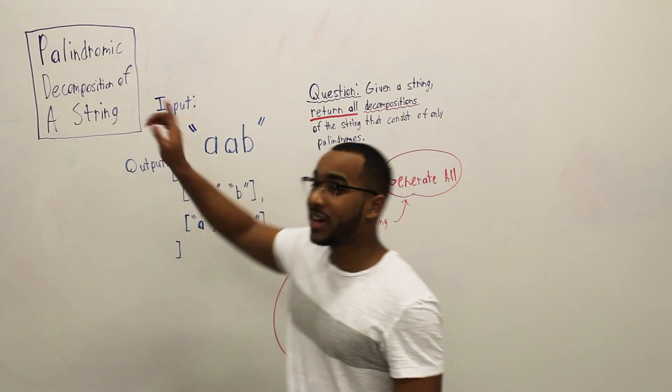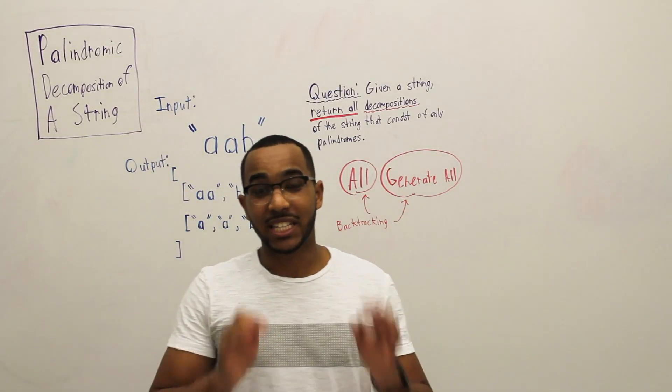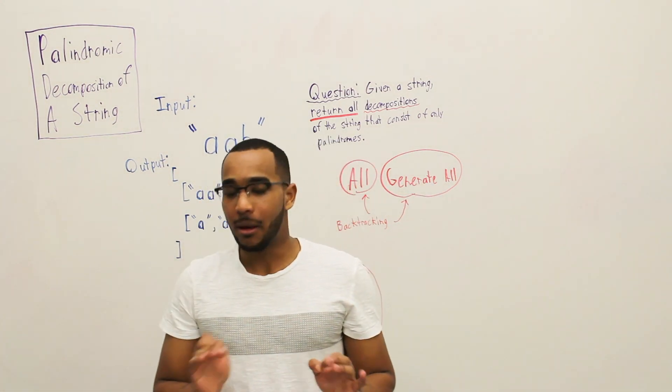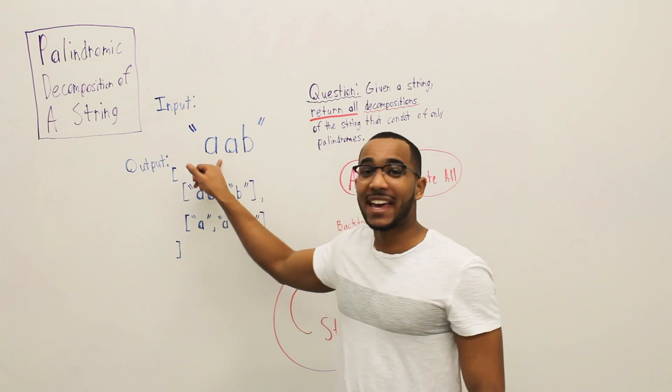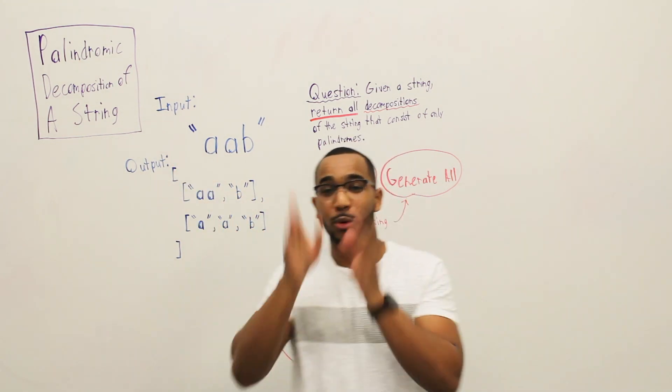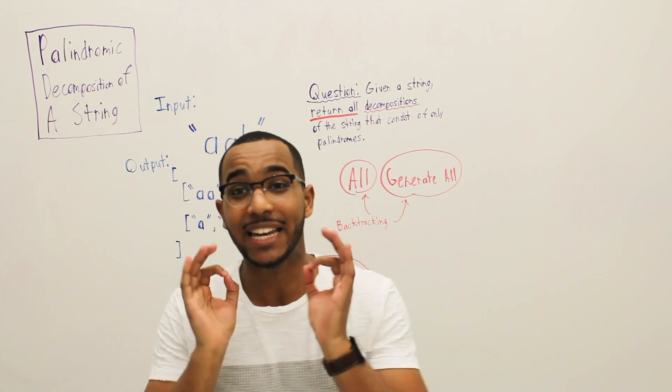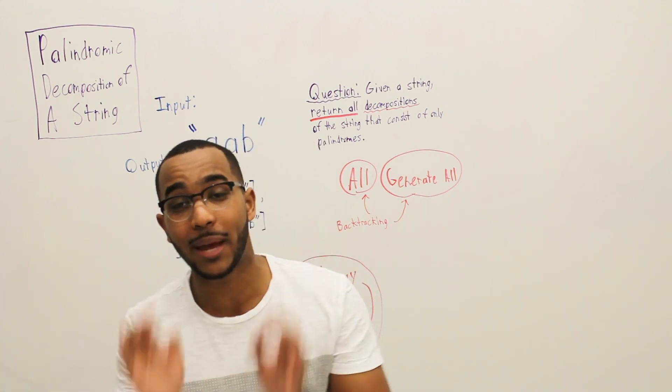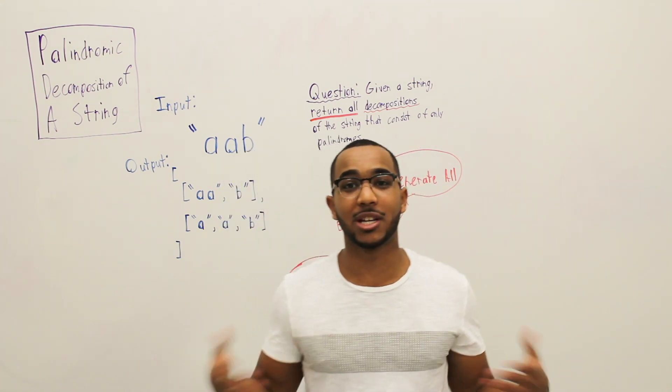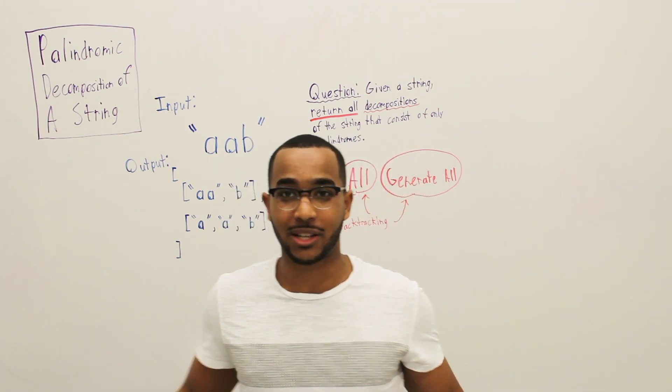Today's question is, generate all palindromic decompositions of a string. This sounds very intimidating, but it is not. We're going to get an input as a string, and we're going to decompose that string, break it up, chop it into pieces. Each of those pieces are going to be a palindrome. A single letter is a palindrome. It mirrors on itself because it's just a single letter.